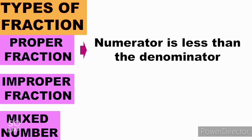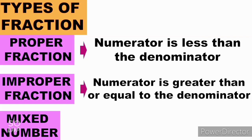Proper fraction: the numerator is less than the denominator — meaning the denominator is bigger than the numerator. Next, improper fraction: the numerator is greater than or equal to the denominator — meaning the numerator is bigger than the denominator, or they are equal.